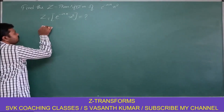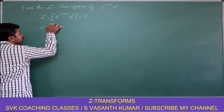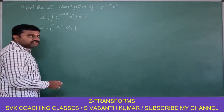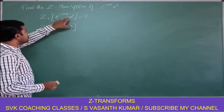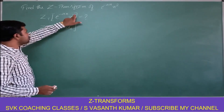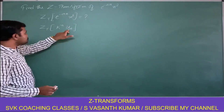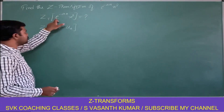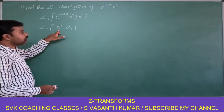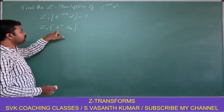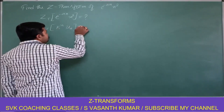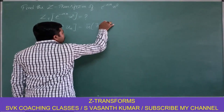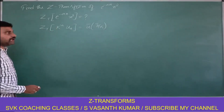The problem is of the form Z-transform of k power n into u(n). Here we have a polynomial term n square and an exponential term, so the problem is of the form k^n · u(n). The Z-transform of k^n · u(n) gives u-bar of Z/K, so the final answer will be in terms of u-bar of Z/K.